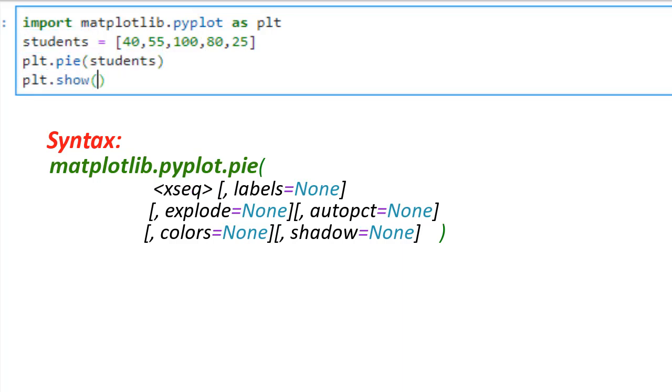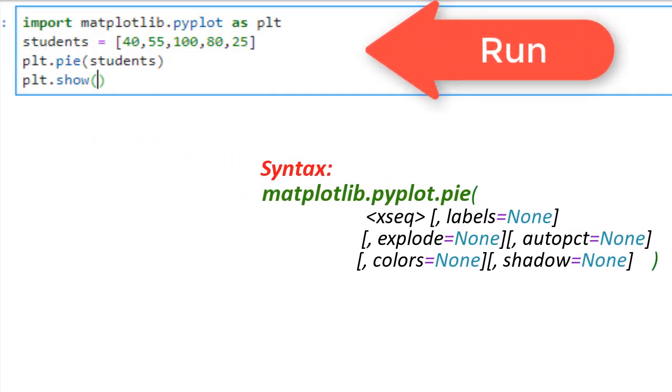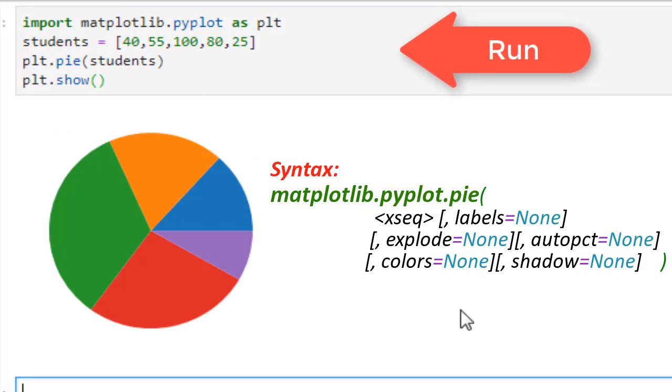After you call pie, you need to call show function which is needed to display the pie chart to us. Let's run the program with these commands and you see a basic chart is in place.